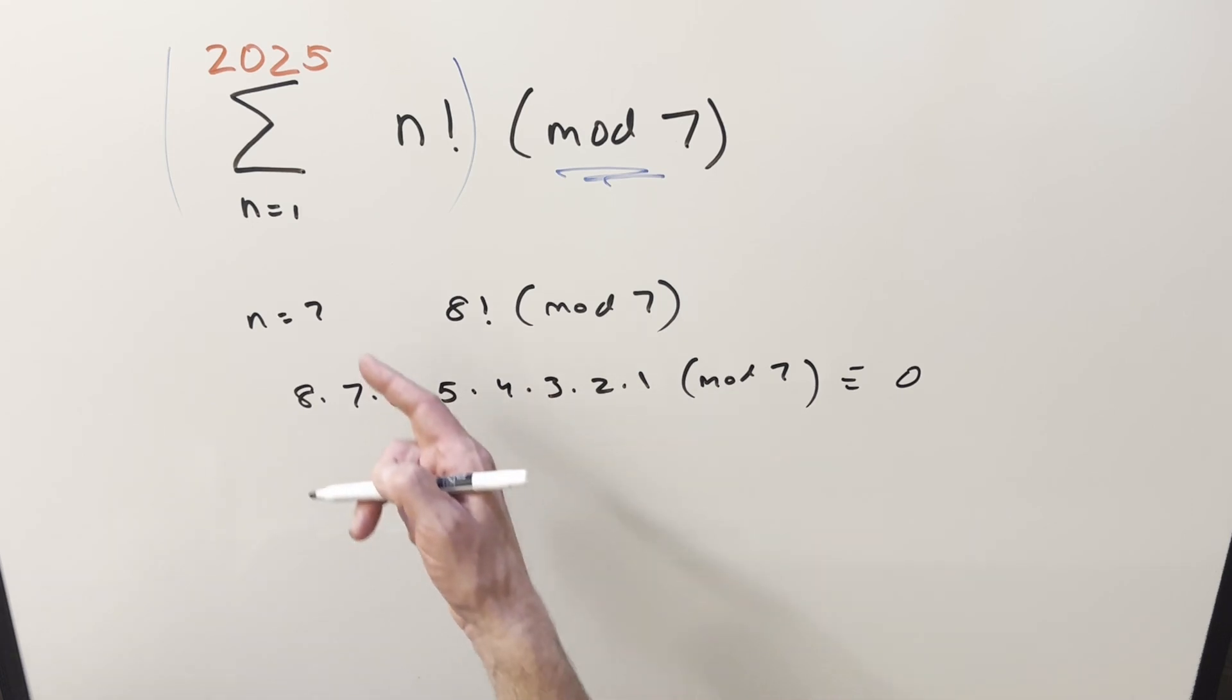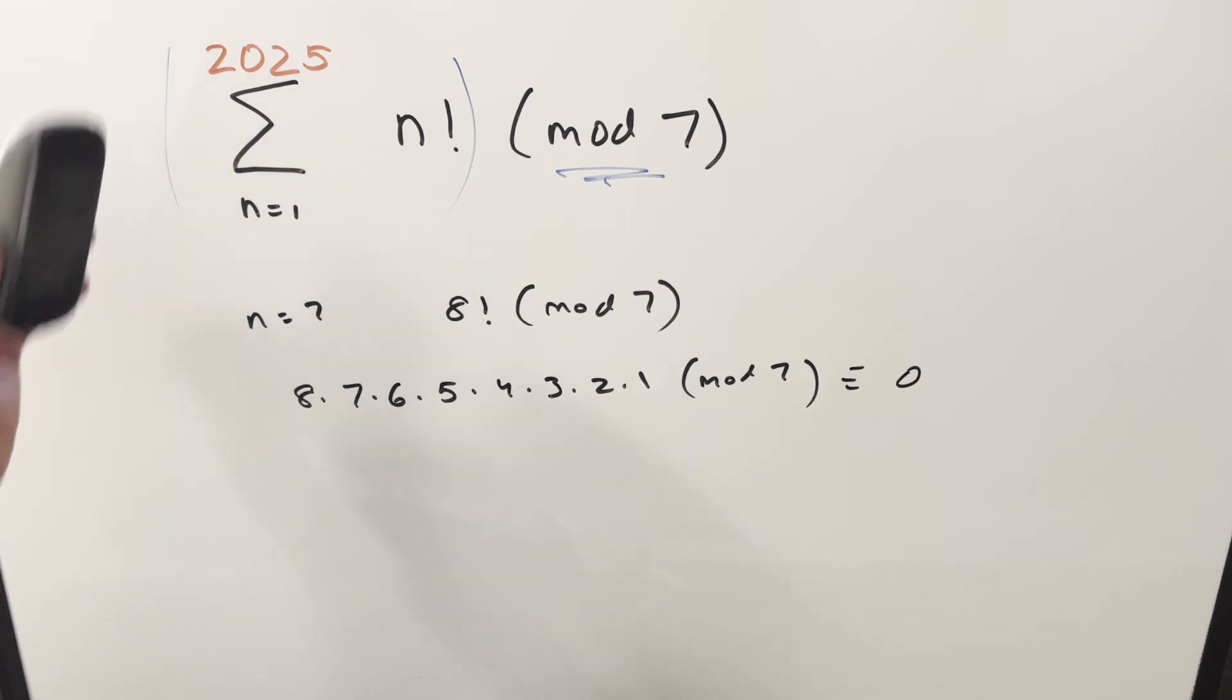We can keep going 9, 10 all the way to 2025. So really the joke of it is the 2025 really doesn't matter very much or it doesn't matter at all. It actually could be, it doesn't even matter.